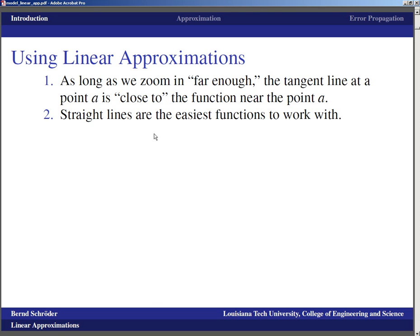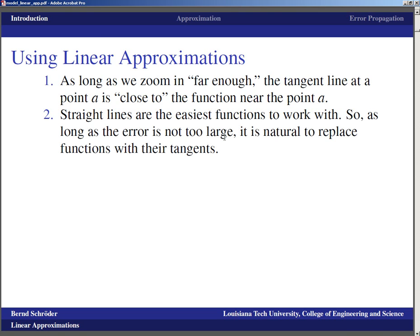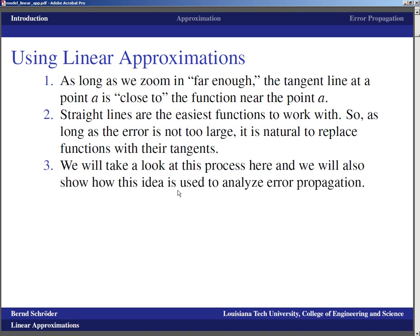That is basically the idea for linear approximation. As long as we zoom in far enough, the tangent line is close to the function near the point where we computed the tangent line. Straight lines are the easiest functions to work with, and so as long as the error is not too large, it is fairly natural in a computation to replace functions with their tangents, or let's just say it used to be that way until digital calculators made ugly numbers very quickly accessible.